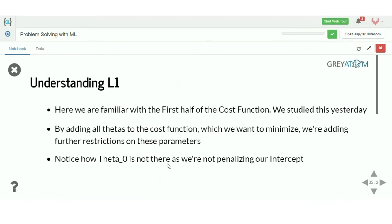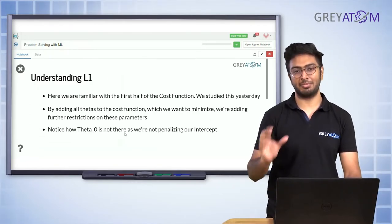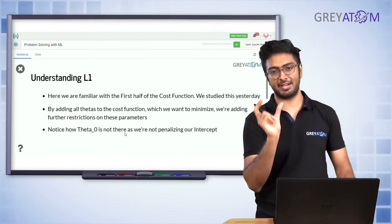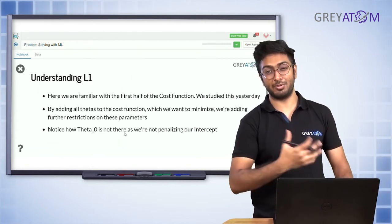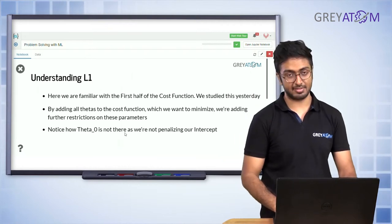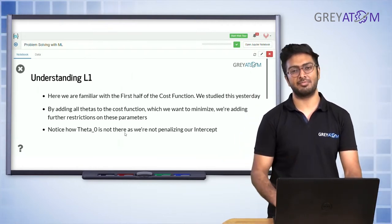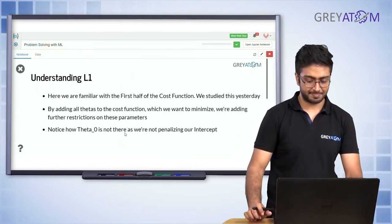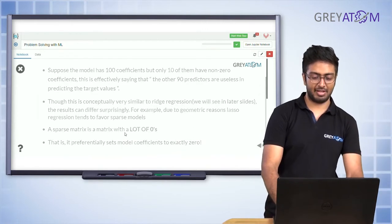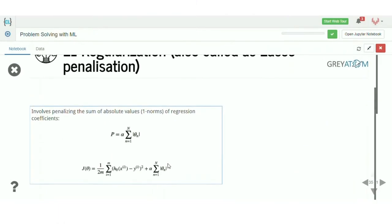The new cost function for L1 regularization is: minimize (prediction minus target) plus the summation of the modulus of parameters. We add this constraint so the model learns from the data but with a penalty on large coefficients. Importantly, we do not include θ₀ (the intercept) in the penalty — the summation starts from n=1. So we penalize all the other coefficients — the x², x³ coefficients and so on — but not the bias term.